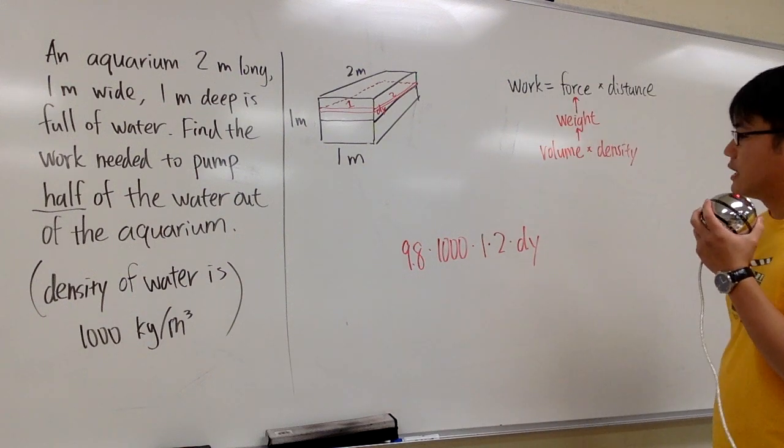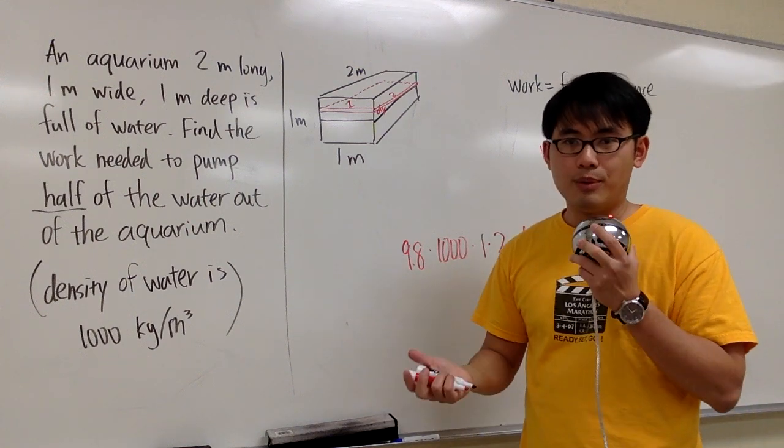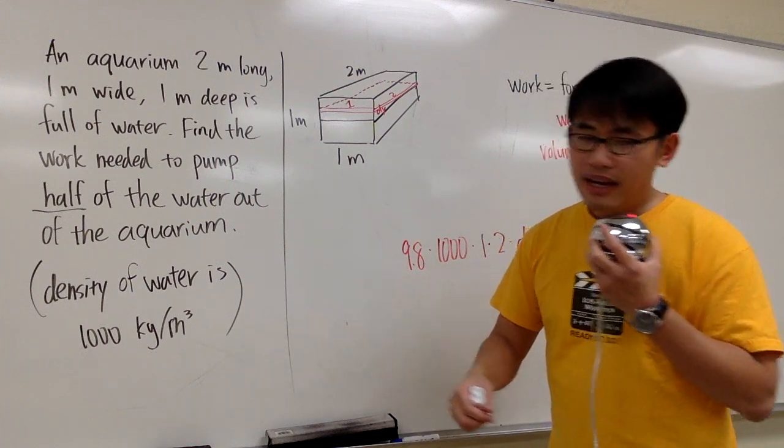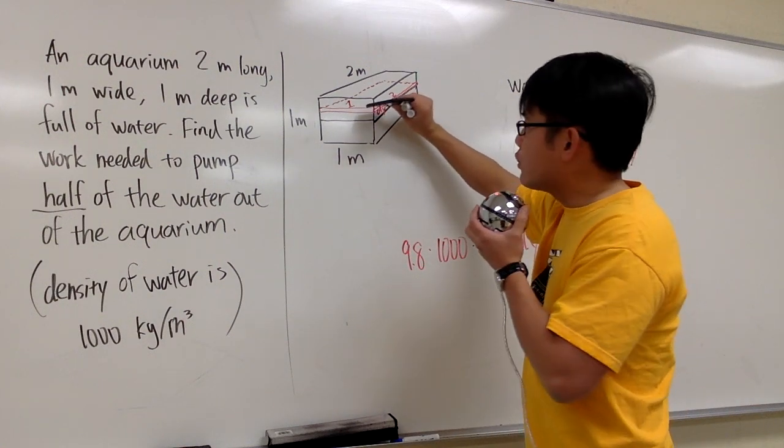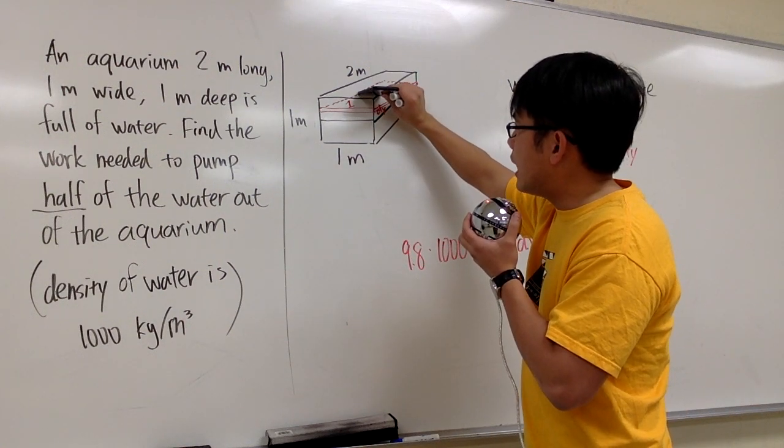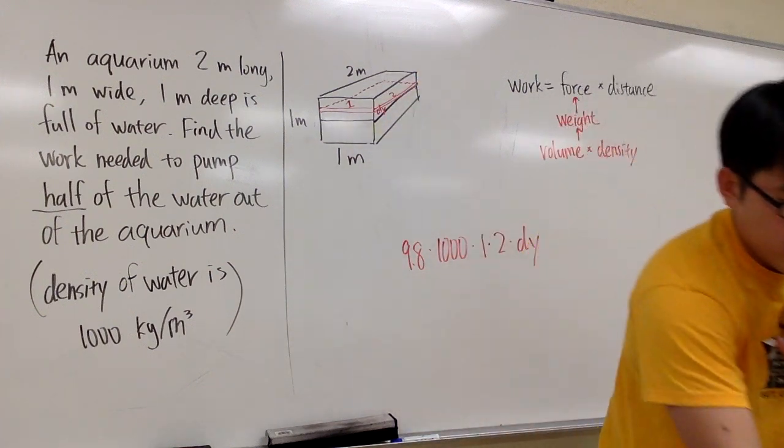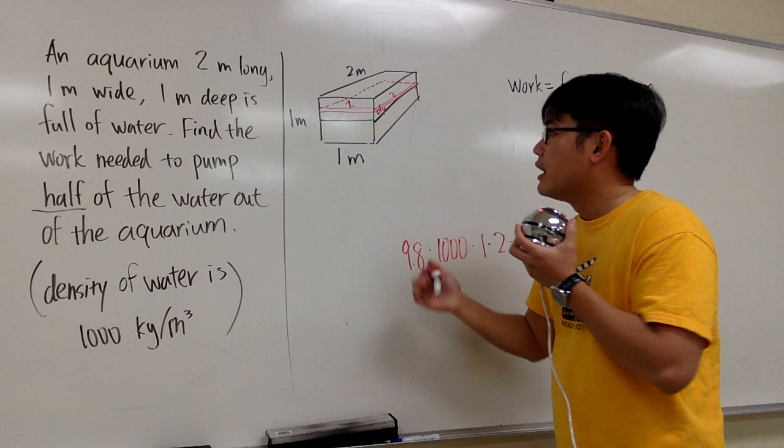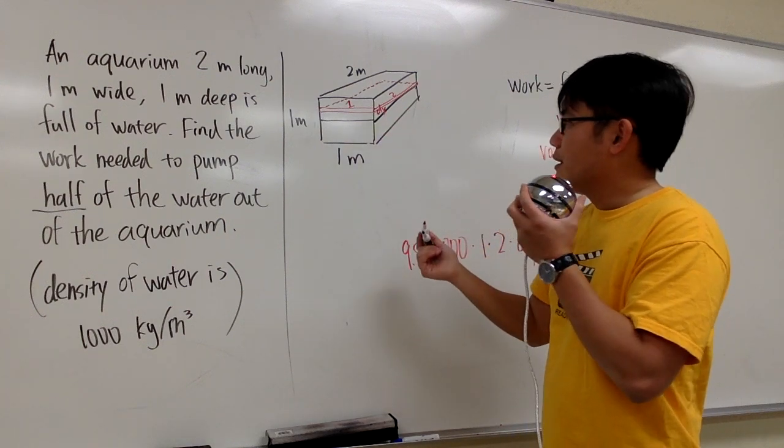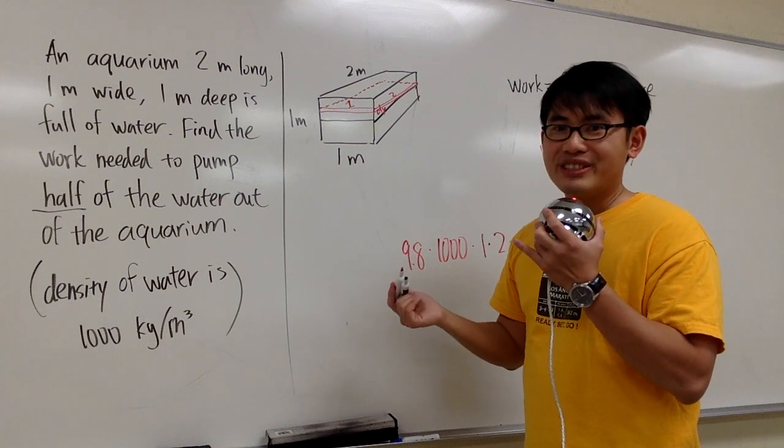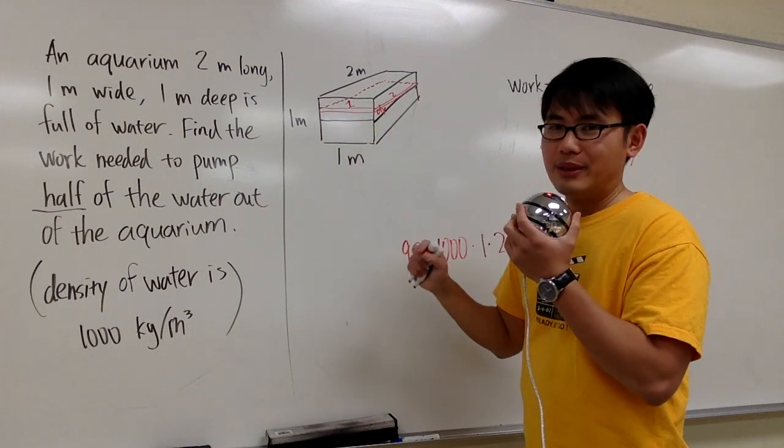That takes care of the force. Now we have to figure out the distance. For the distance, it's usually based on our labeling most of the time. This is the slice of water that we are talking about. How far do I have to travel from here up to the top in order to pump out this amount of water, this slice of water, based on our labeling? In this case, it doesn't really matter how you label it because this is constant and that's also constant. So it's pretty straightforward.